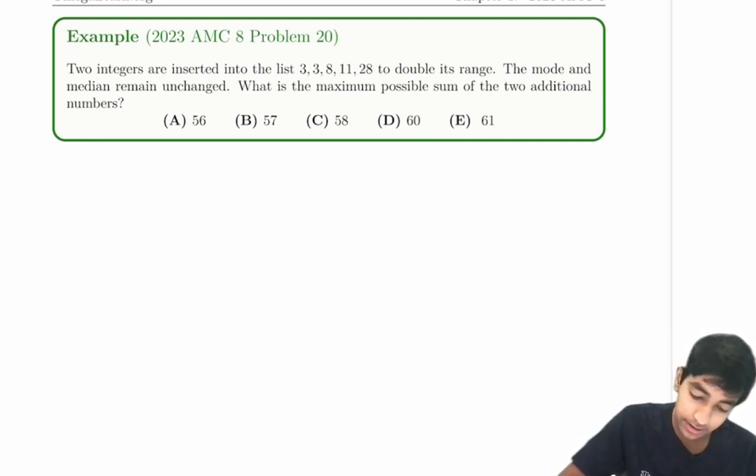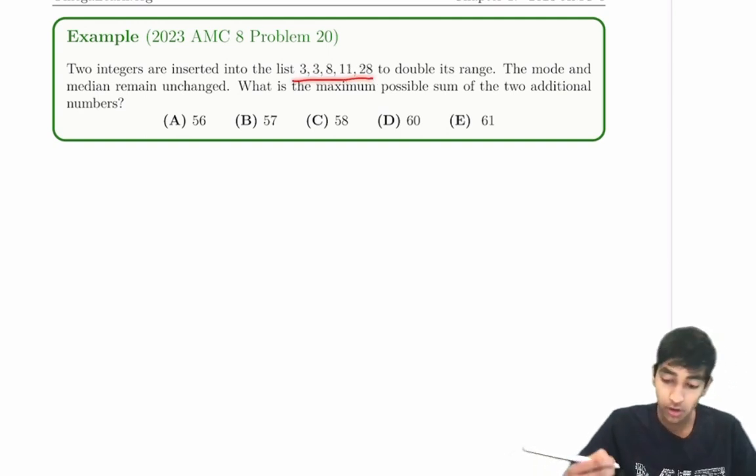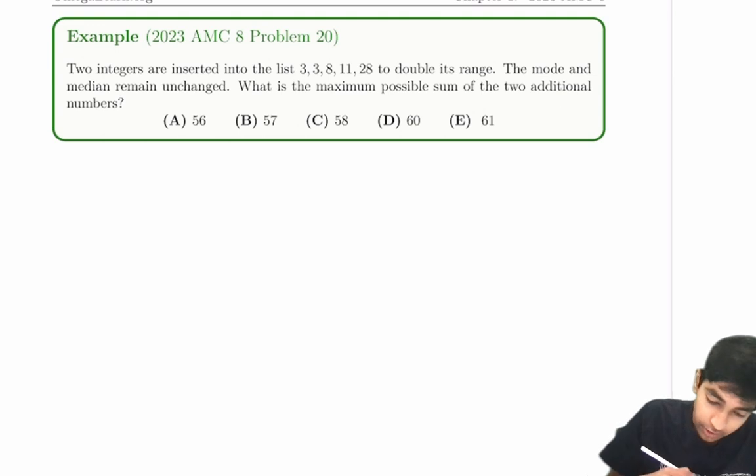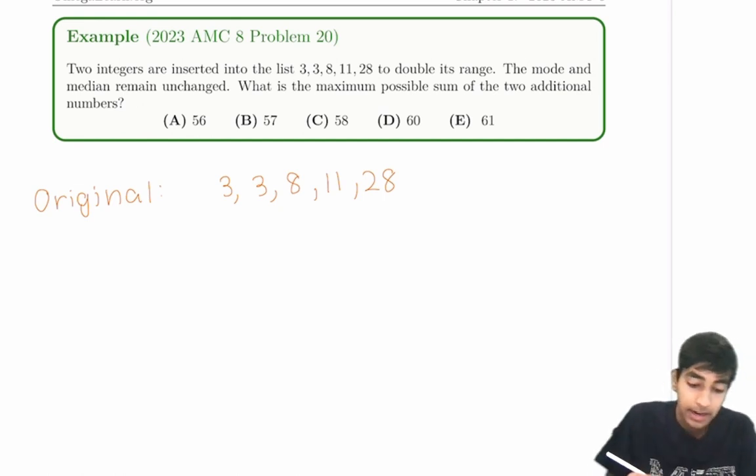Two numbers are inserted into the list 3, 3, 8, 11, 28 to double its range. So first of all, let's call this our original sequence. It's 3, 3, 8, 11, 28. And we're given that two numbers are inserted to form the new sequence.